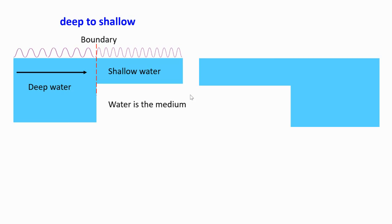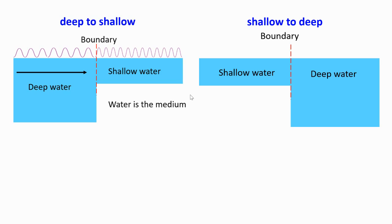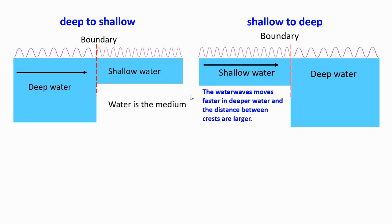What about when water waves move from shallow to deep water? We generate a wave on the shallow water and observe how it behaves in deep water. The water waves move faster in deep water and the distance between crests is larger, because the frequency remains the same.